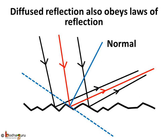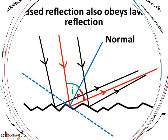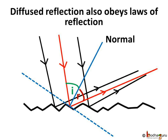Let us see this. We divide the uneven surface into small fragments and look closely. Take this ray in red colour. We draw a perpendicular on the fragment of surface it got reflected from. Here, the solid blue line is perpendicular to the fragment of the surface and it is the normal. If we measure the angle of incidence, which is the angle between the normal and the incidence ray, represented by angle I.